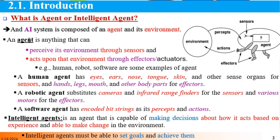An agent is always defined by its ability to perceive and perform — in other words, sensors and effectors are used. For example, a robot can be an example of an agent, and a camera can be used as a sensor.